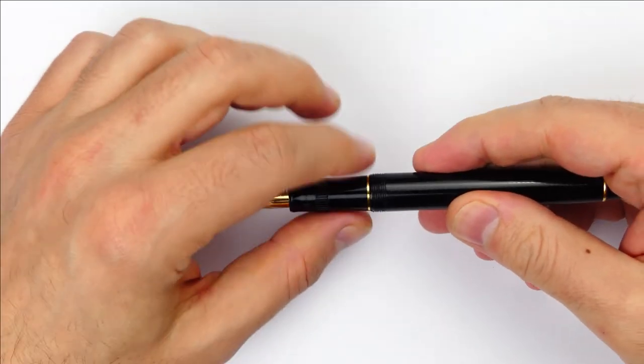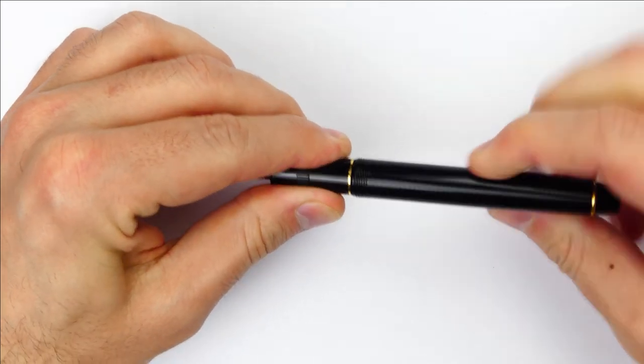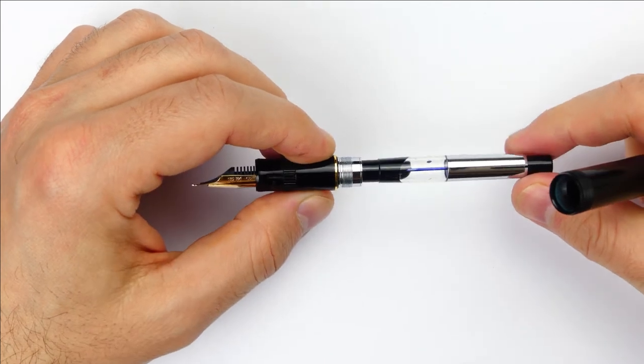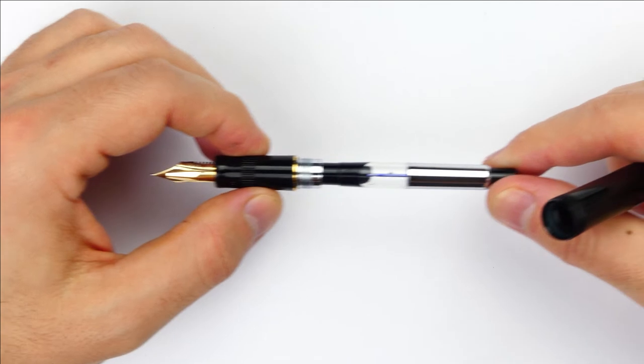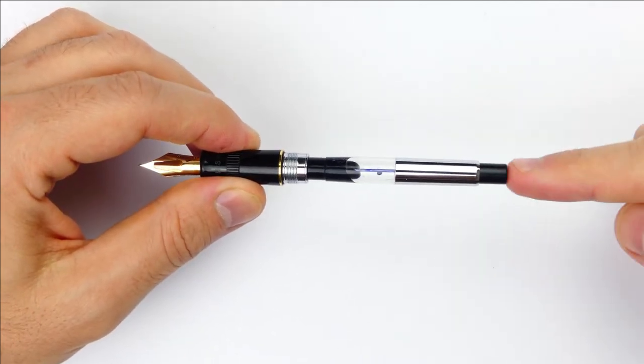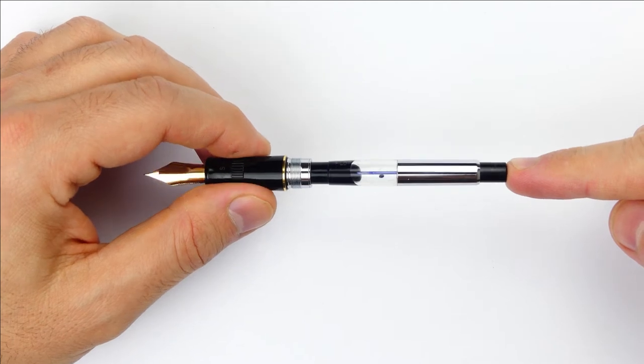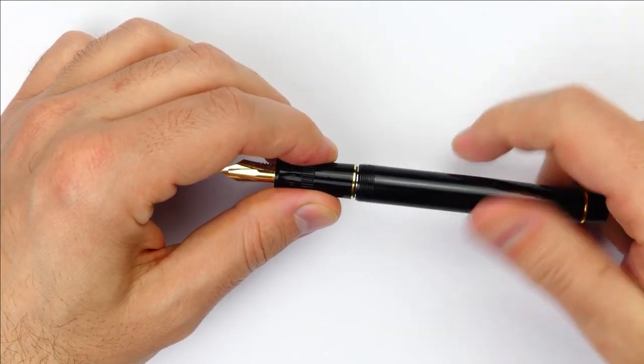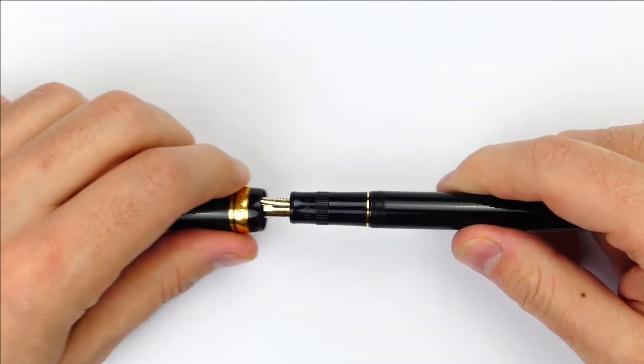And at the end of the section, we have another gold plated ring. Unscrewing the barrel reveals the metal section and the proprietary Pilot converter called CON-70 included with the pen. This converter is a pump converter and draws ink by pumping on this knob. The ink capacity is larger than the standard international converter, but it is really a pain to clean.